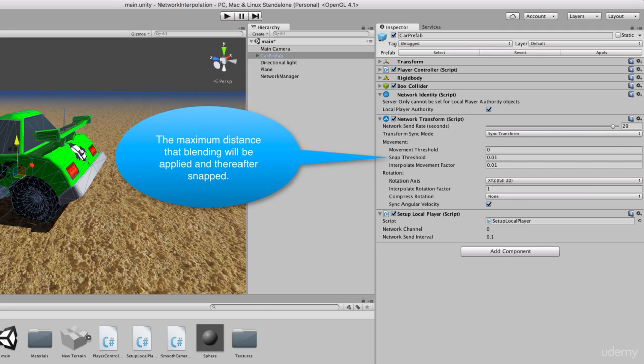The maximum distance that blending will be applied to correct the distance position between the networked car and the car on the current machine. If the distance gets too far apart, then the object will simply be snapped to its new location. The amount of interpolation to be performed can also be specified.